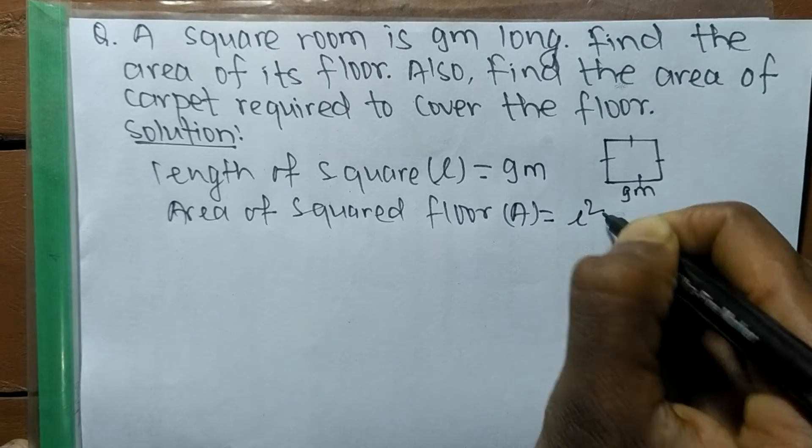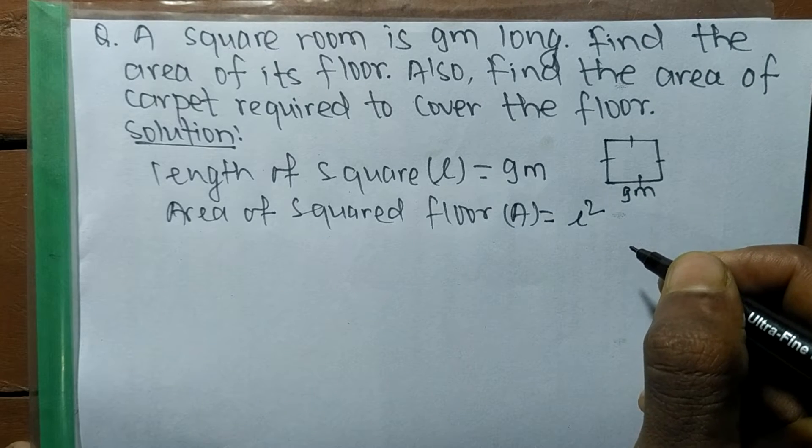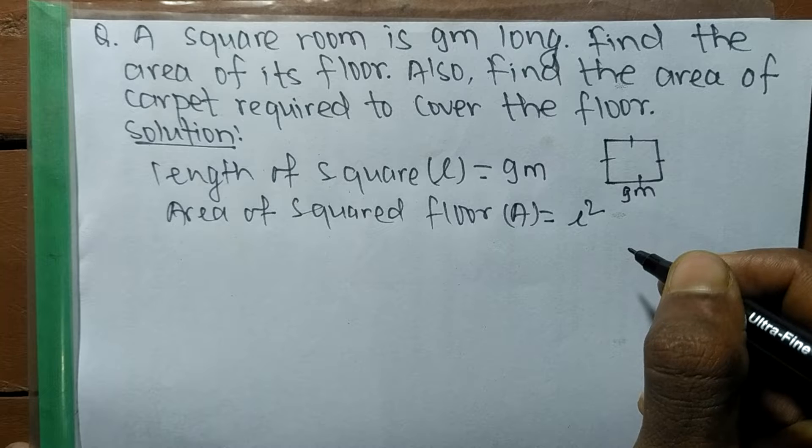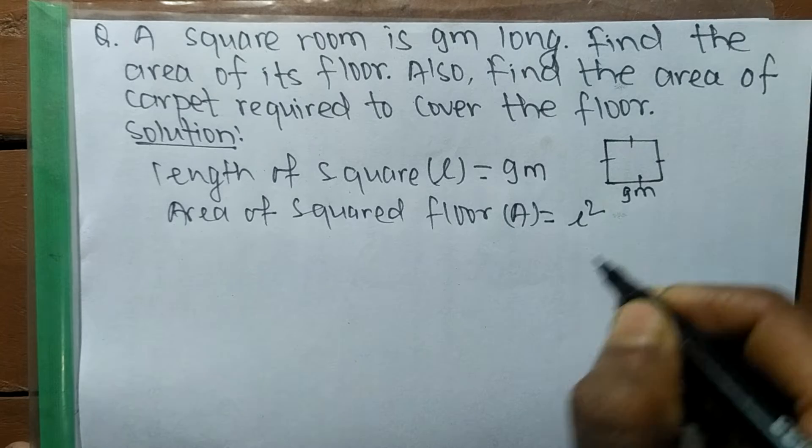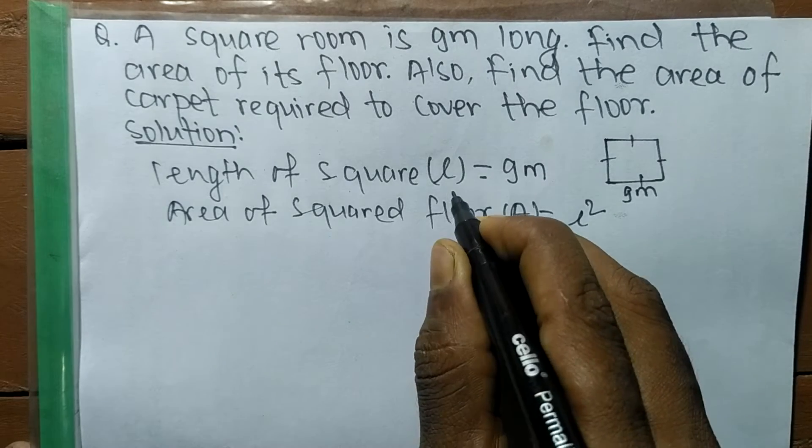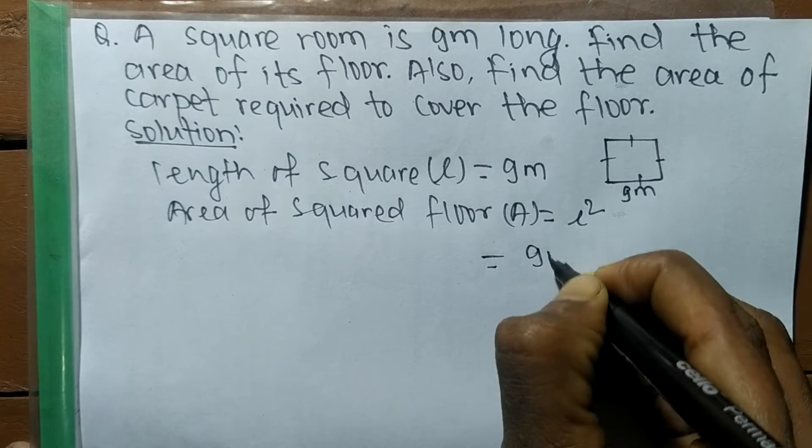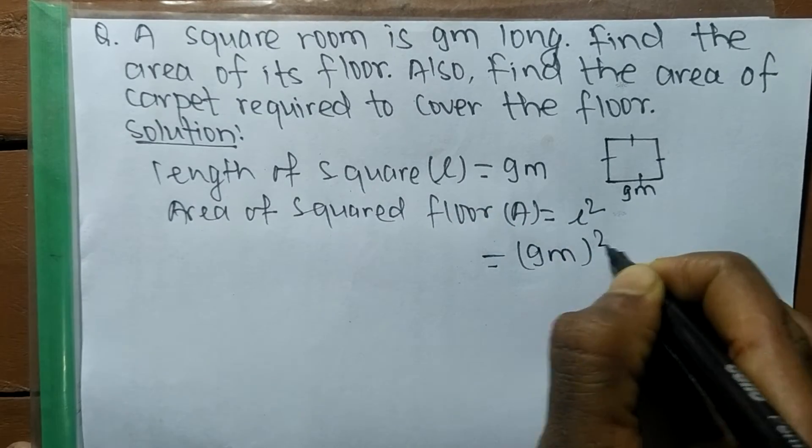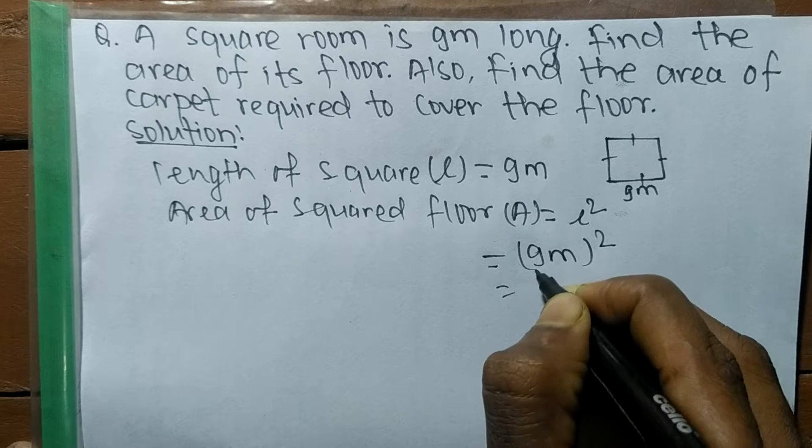When you are going to find any square-shaped area, then its formula is L². So L means we have length and it is 9 meters, so it is 9 meters squared.